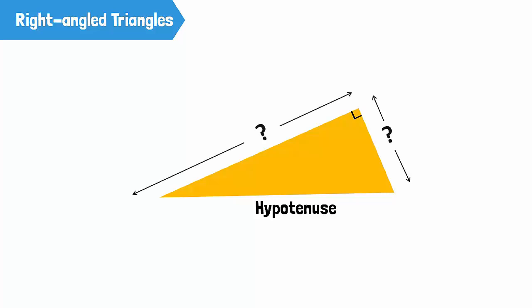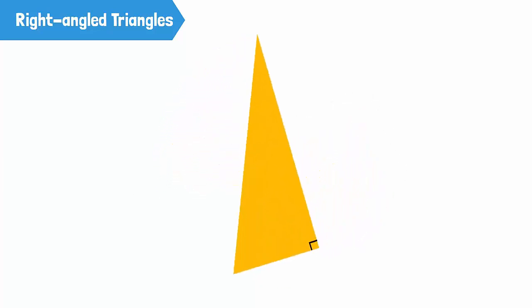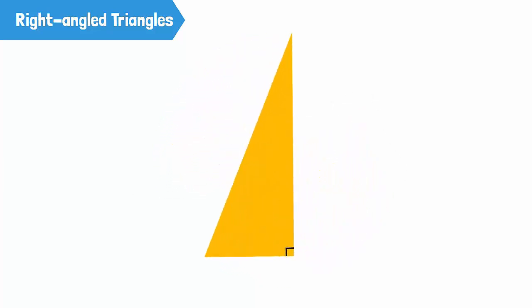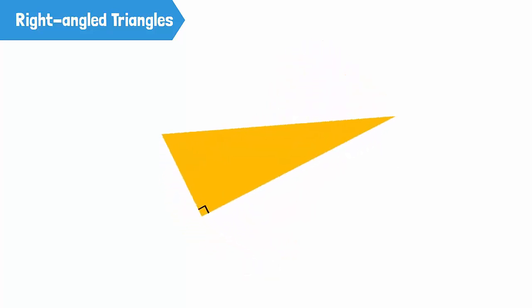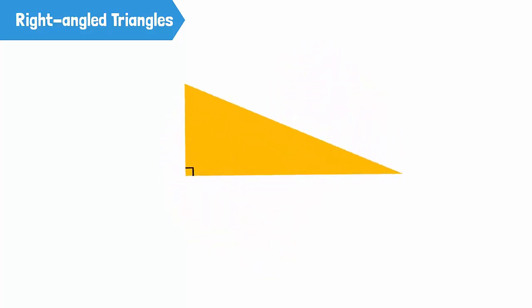But what about the base and the perpendicular? If you rotate the right angle triangle this way, this side will be called the base and that side will be called the perpendicular. Now, rotate the triangle one more time.